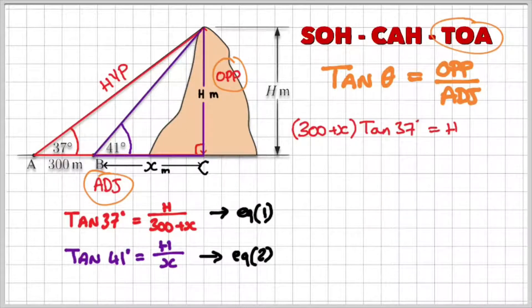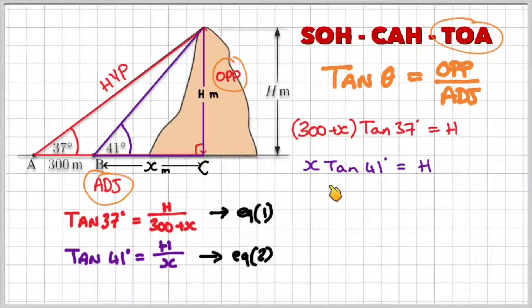So I can rearrange the equations. I have 300 plus x multiplied by tan 37 is equal to h. All I've done there is I've multiplied both sides by 300 plus x. For my second equation, you can see if I multiply the denominator on both sides, I get x times tan 41 is equal to h.